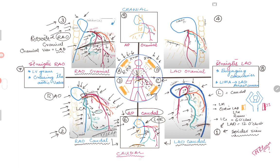Moving on to another cranial view: looking at picture four, the catheter is a JL catheter coming below the diaphragm — femoral access. The catheter is open like an L, so it's probably an LAO view, and since you see the diaphragm in the middle of the image, it's probably a cranial view. Exactly as labeled, we're talking about the LAO cranial view.